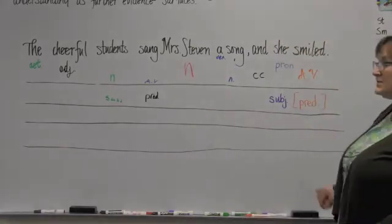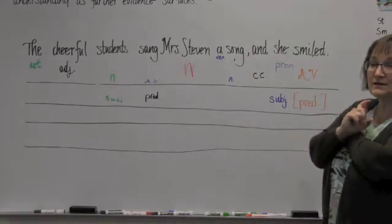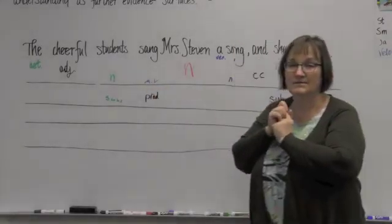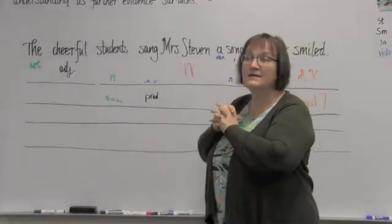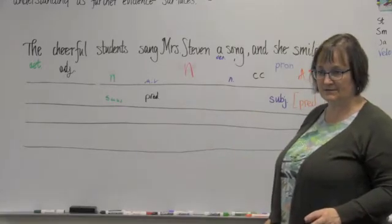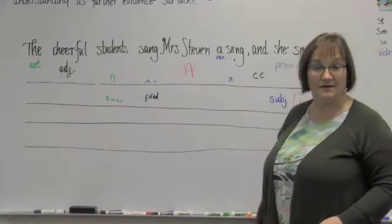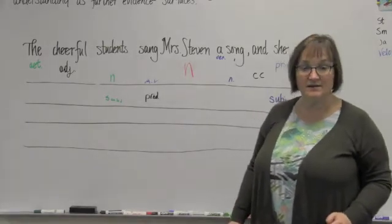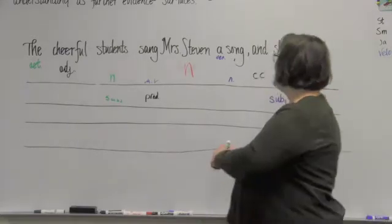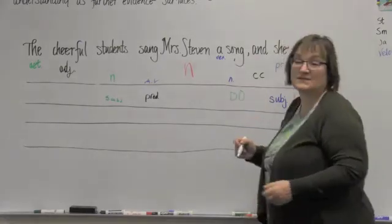Now that we have found subject predicates, we have to ask ourselves a question, don't we? What are we looking for? We have action verb. What are we going to look for? Frankie? A direct object? Yes. And in order to know if we have one, what question are you going to ask yourself? Students? Yeah. The cheerful students sing what? Okay. Is there a clear answer to that? Yeah. A song. Okay. They sang a song. We do indeed have a direct object here, don't we? The song is our direct object. That's what they sang.